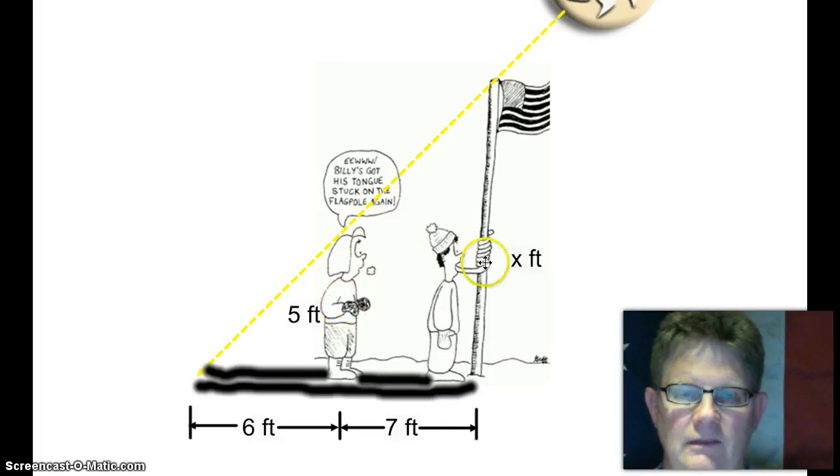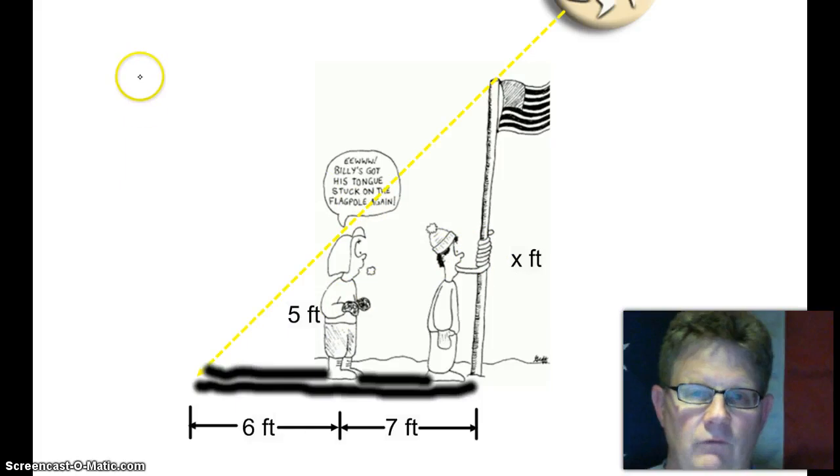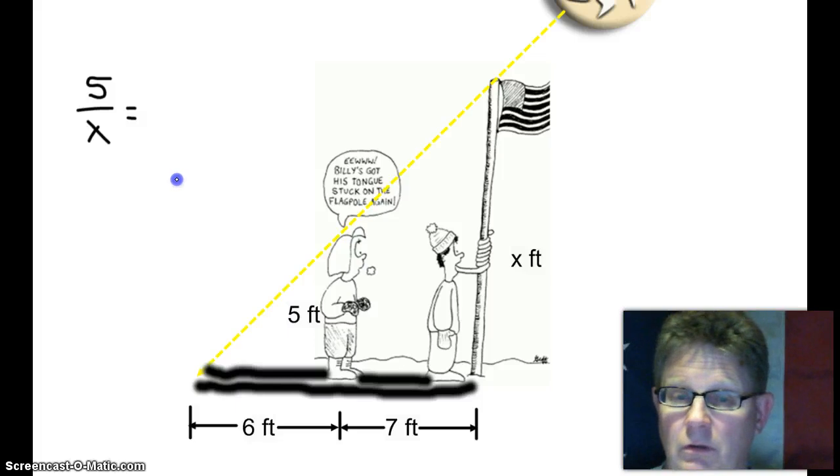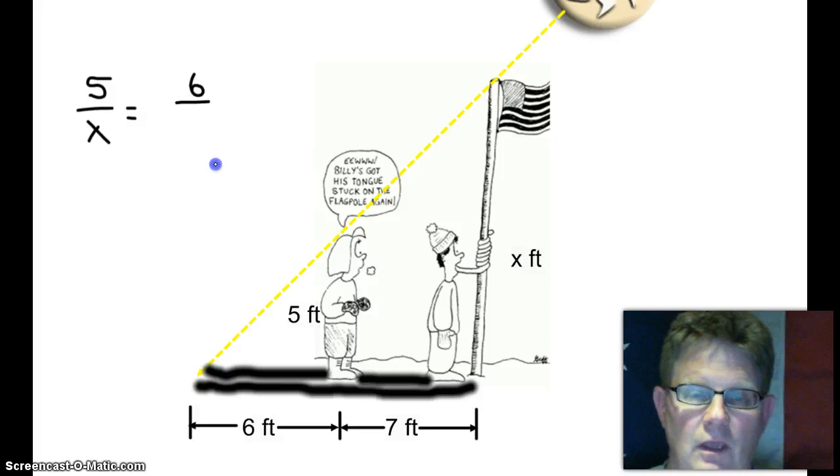So let's go height to height again. How tall is that flagpole? That girl is five feet tall. So five over x equals... what's the shadow of the girl? That's right, it's six.